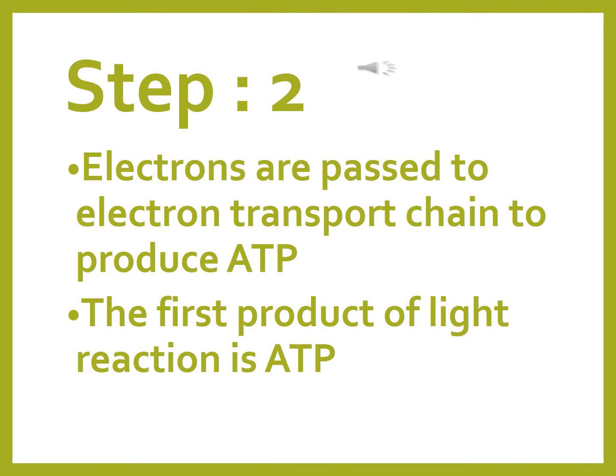These excited electrons are passed through the electron transport chain and they produce ATP. So the first product of light reaction is ATP.